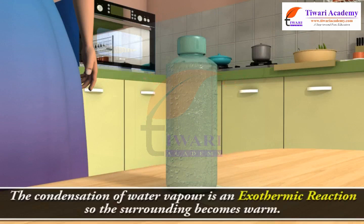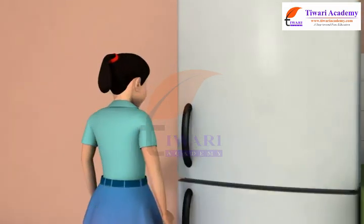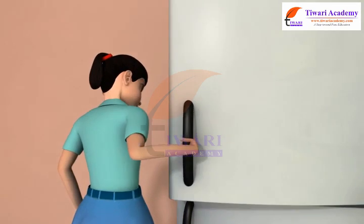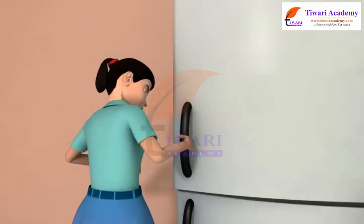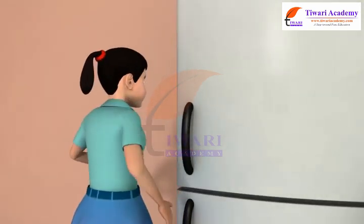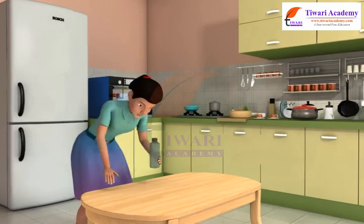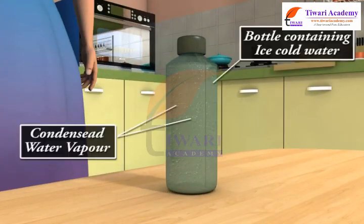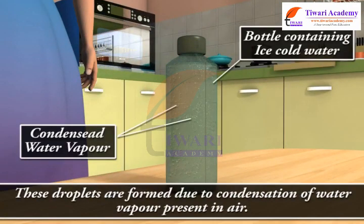The condensation of water vapor is an exothermic reaction, so the surrounding becomes warm. You may have seen water droplets on the outer surface of a glass containing ice-cold water. These droplets are formed due to condensation of water vapor present in air.